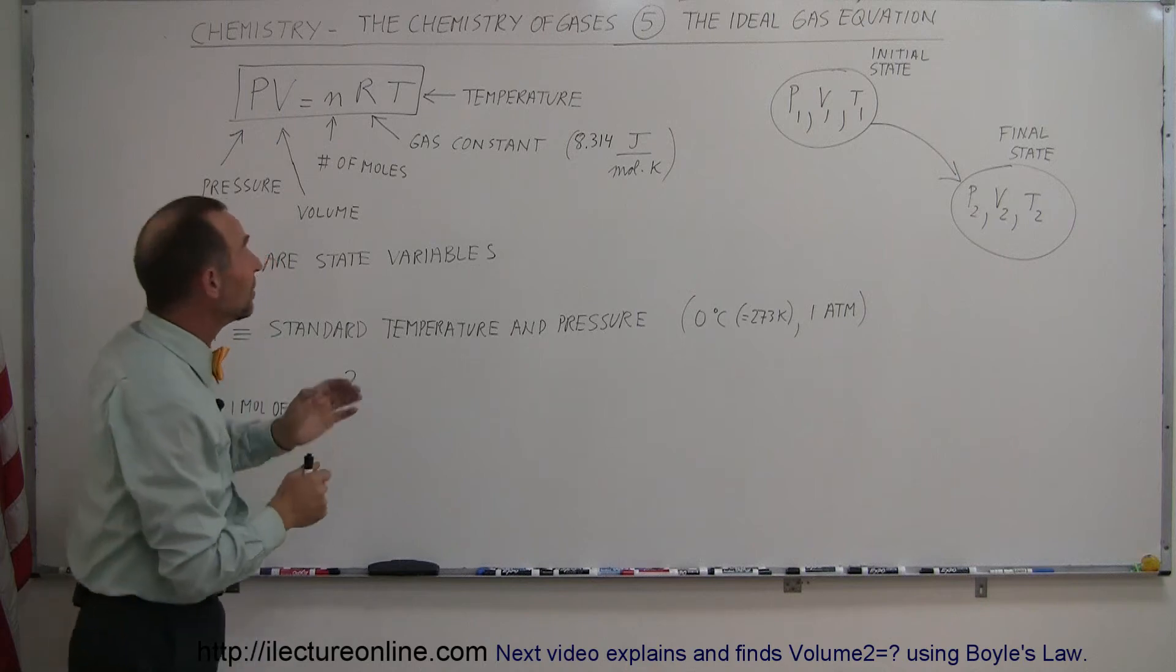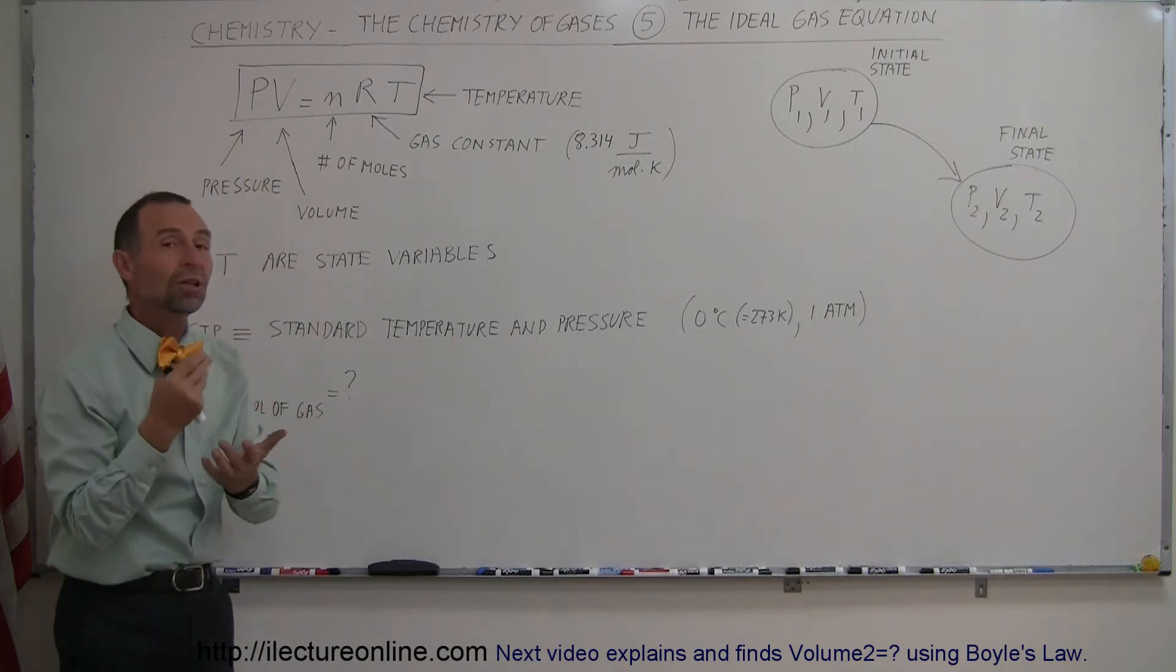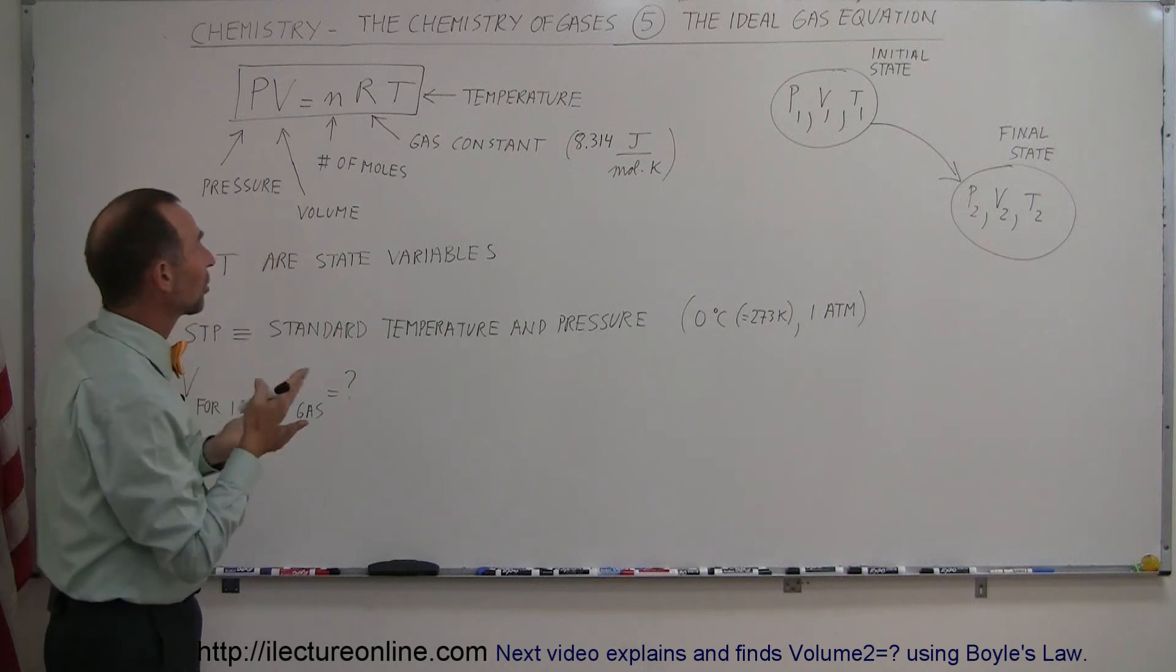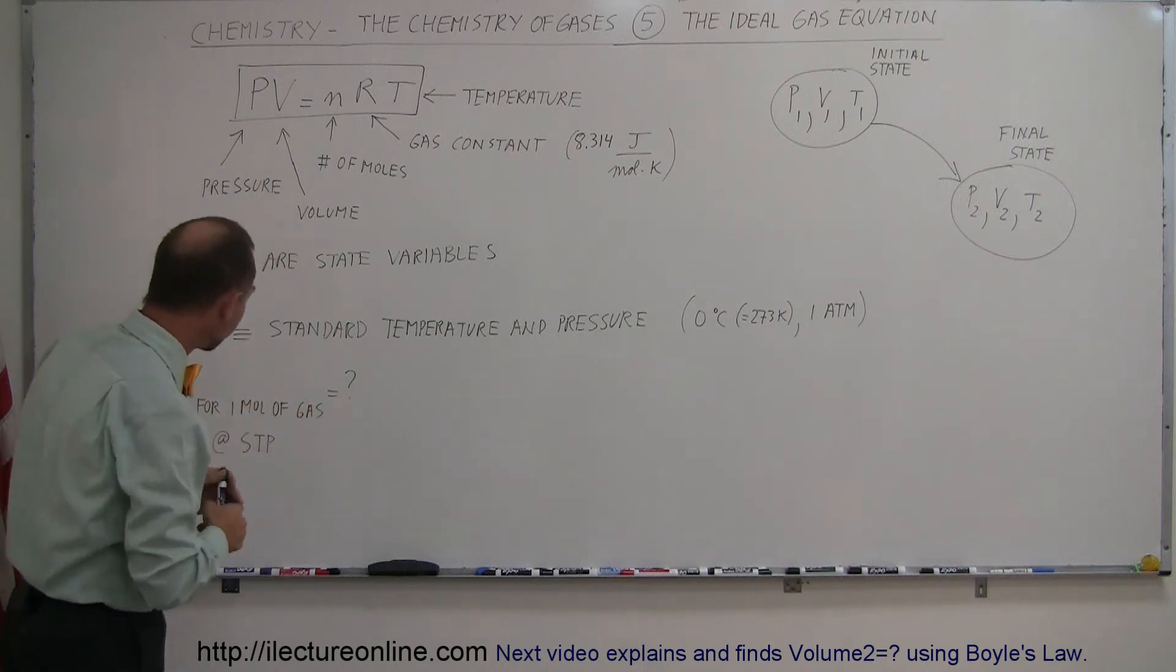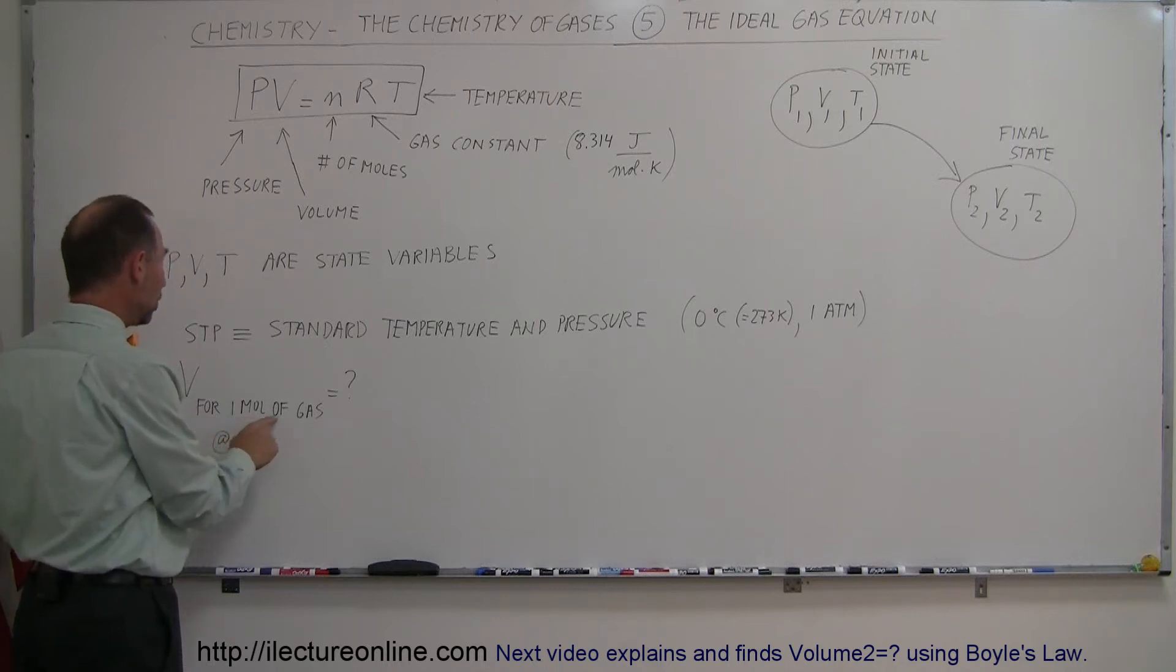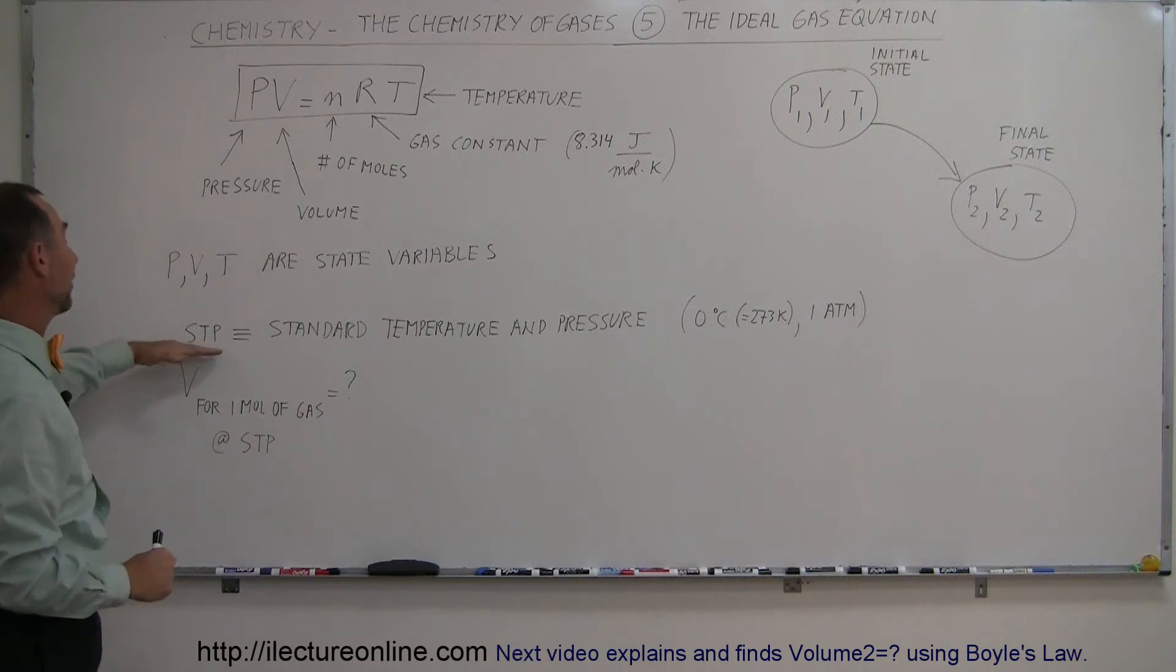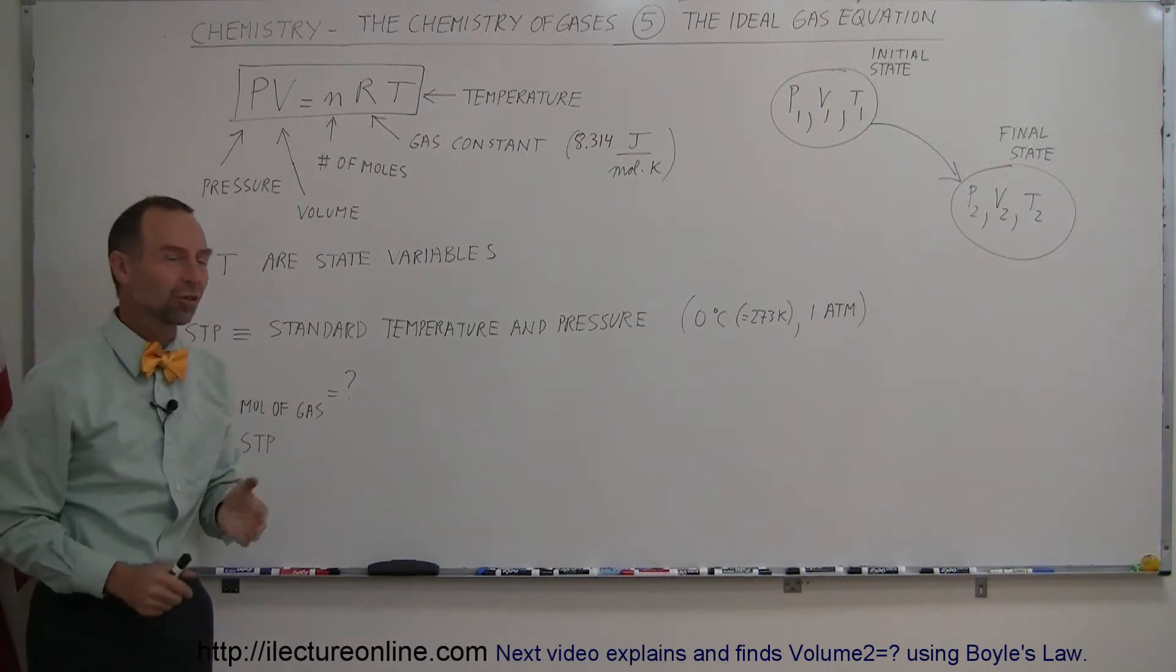A second thing you can do with the PV equals nRT equation is that if you know most portions of that equation, you can always solve for the last one. For example, let's say we want to know the volume for one mole of a gas at STP conditions. Before we calculate that, let's first figure out what we mean by STP conditions.